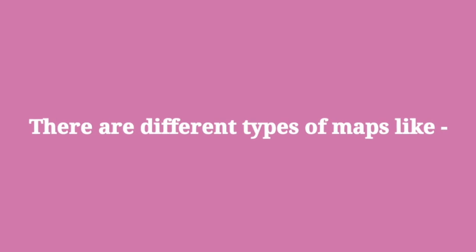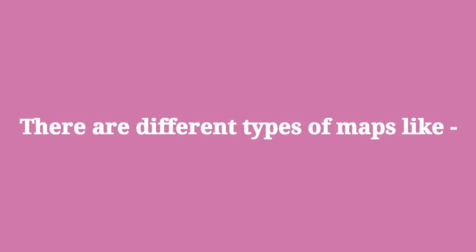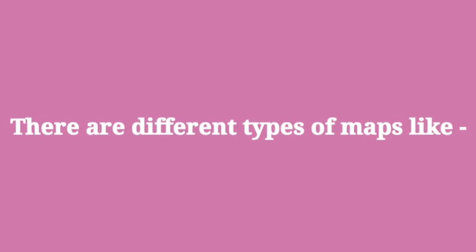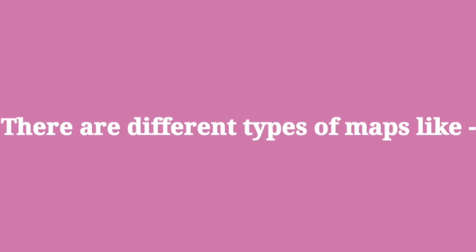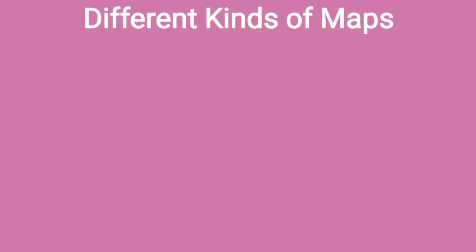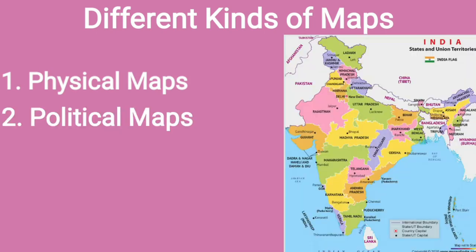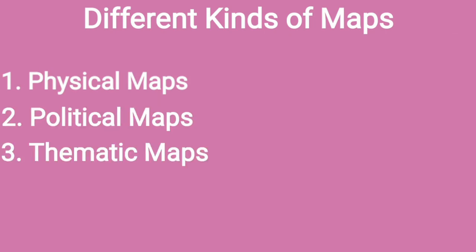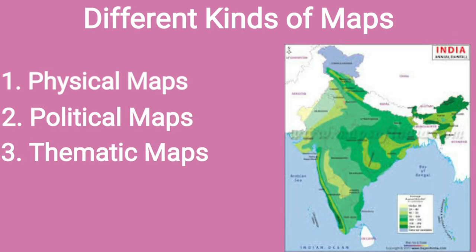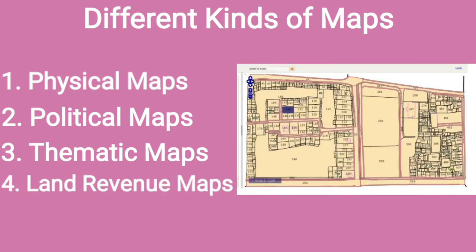There are different types of maps: physical maps, political maps, thematic maps, and land revenue maps.